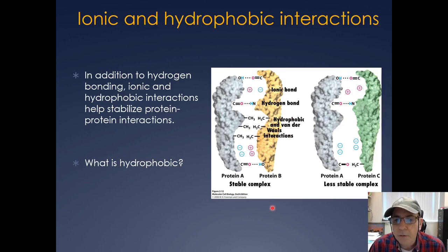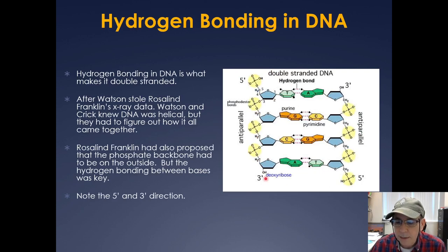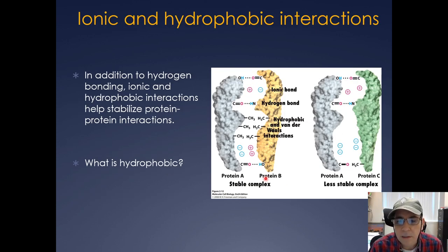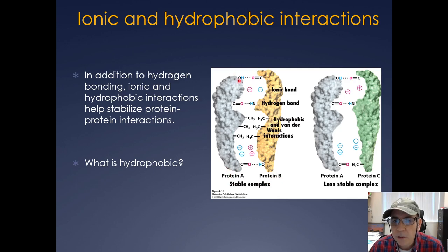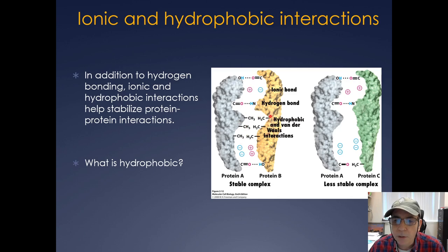Ionic and hydrophobic interactions also come into play with proteins. When it comes to forming large protein complexes, you can have hydrogen bonding, ionic interactions, and hydrophobic van der Waals interactions that help bring proteins together. These are also very important not only for holding two proteins together in a complex, but also in protein folding.